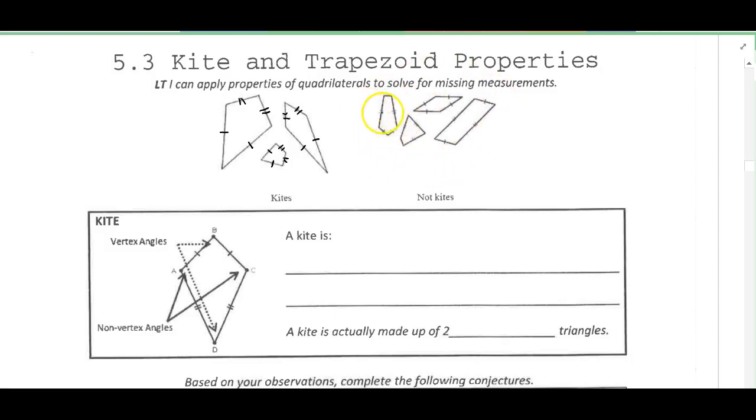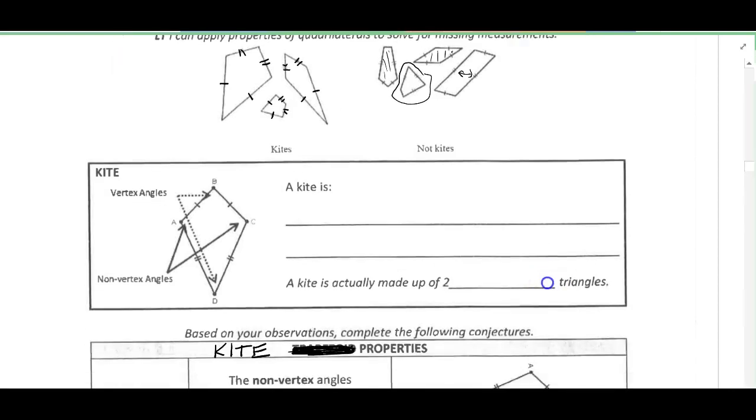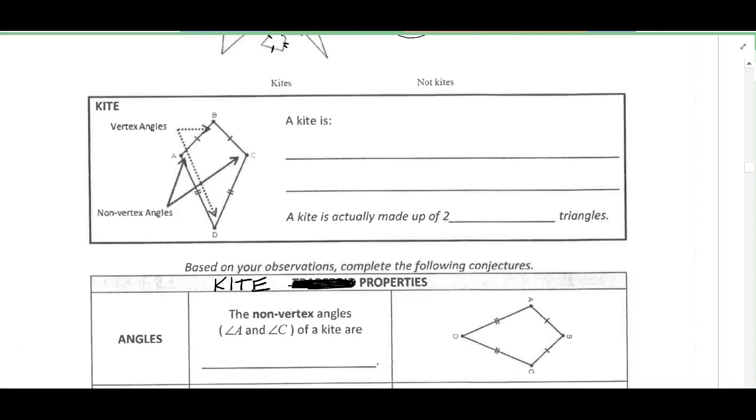But this one doesn't fit because it doesn't have four sides. This one, all the sides are congruent to each other. And this one, the congruent sides are across from each other. And this is some weird shape that only has three pair of congruent sides, so that wouldn't count as a kite either. So our definition of a kite here is a quadrilateral